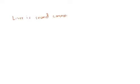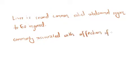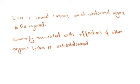Liver is the second most common solid organ to be injured, preceded only by the spleen. Liver injuries are commonly associated with affection of other intra-abdominal and extra-abdominal injuries. The ribs, pleura, lungs, colon, and spleen are common associations.